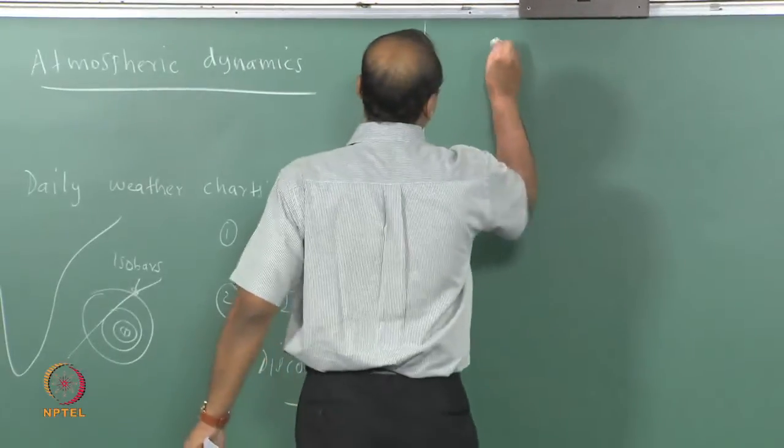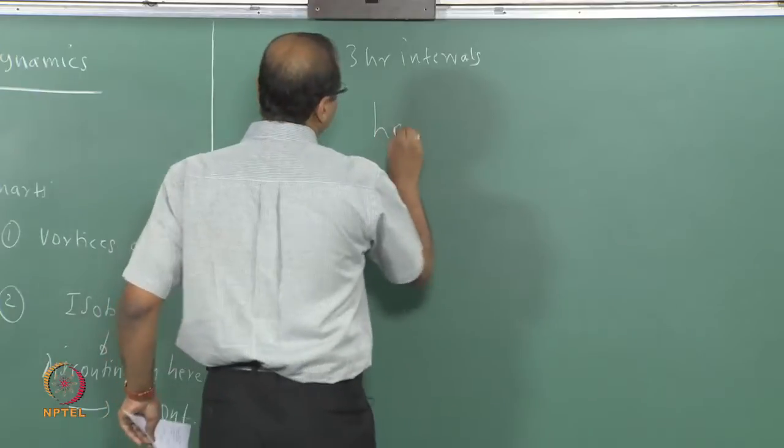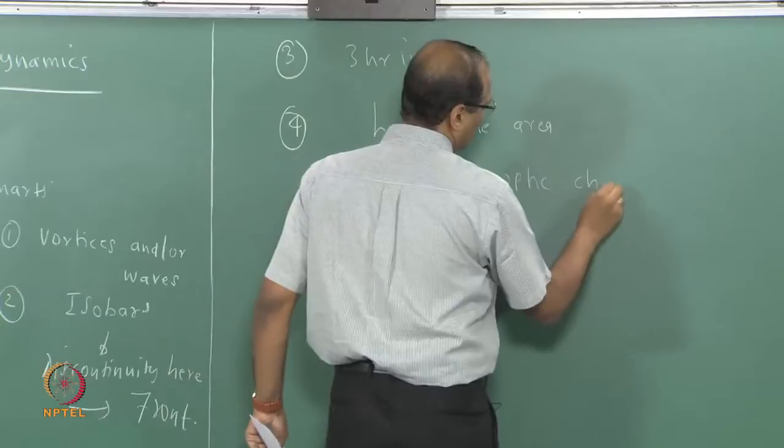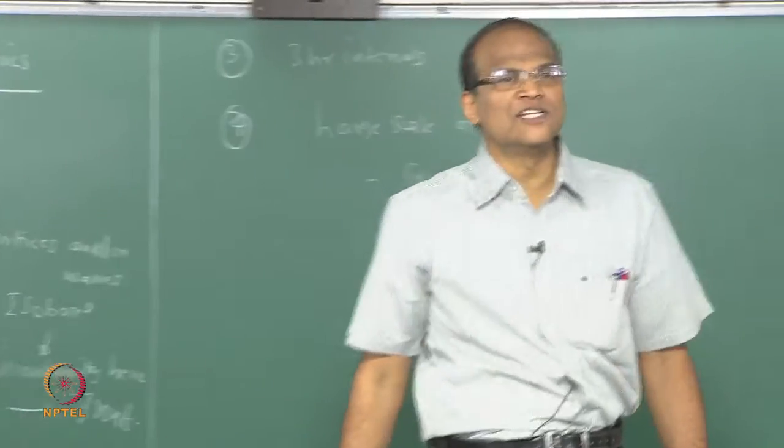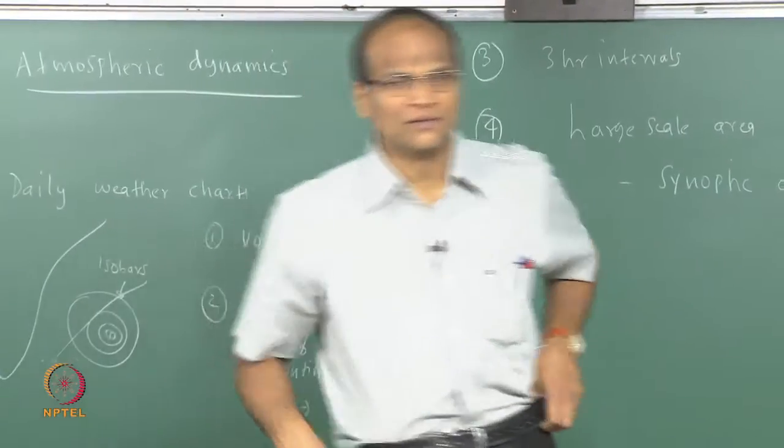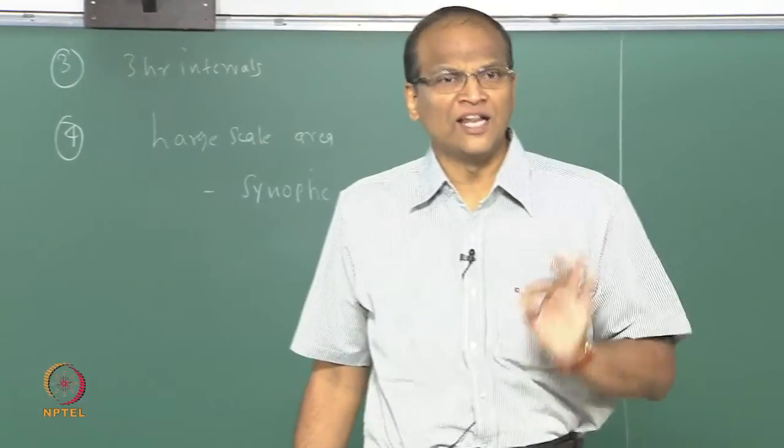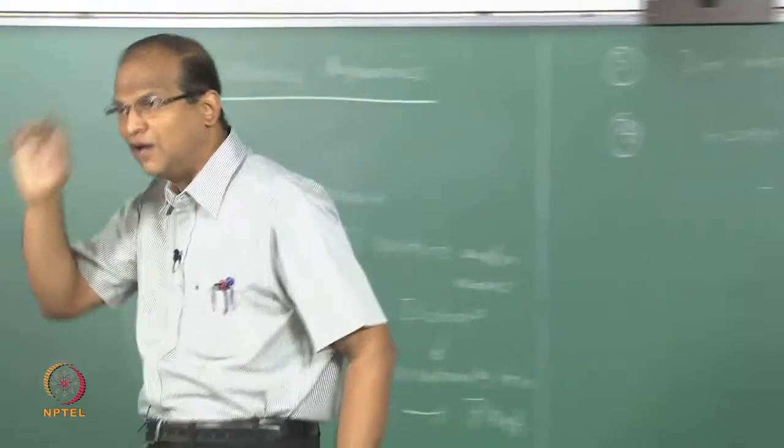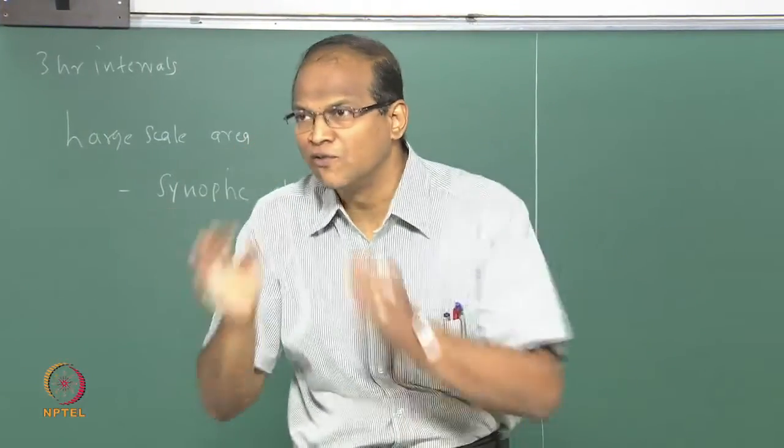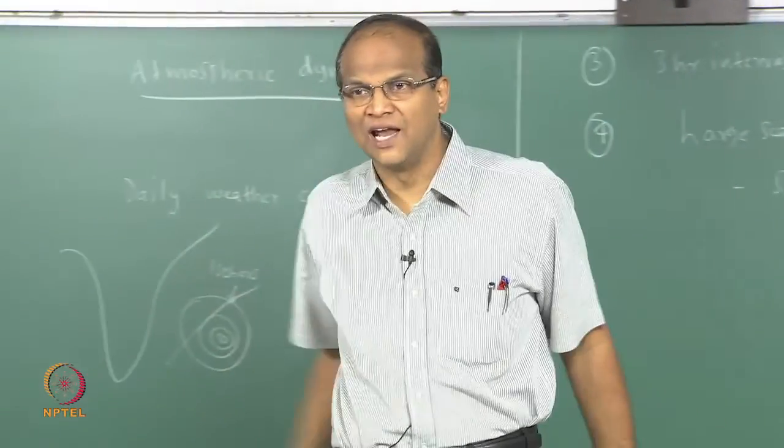Usually, charts are prepared at 3 hour intervals. They are called synoptic charts. Much of conventional meteorology is called synoptic meteorology, where the starting point is pressure, temperature, humidity from various stations. You release forecast once in 3 hours and then you put it on a large chart and then you consider a large scale. That is synoptic meteorology. Whether it will rain in Adyar in the next 3 hours is not synoptic meteorology. That is very accurate. Whether it will rain in a football stadium is not conventional meteorology.